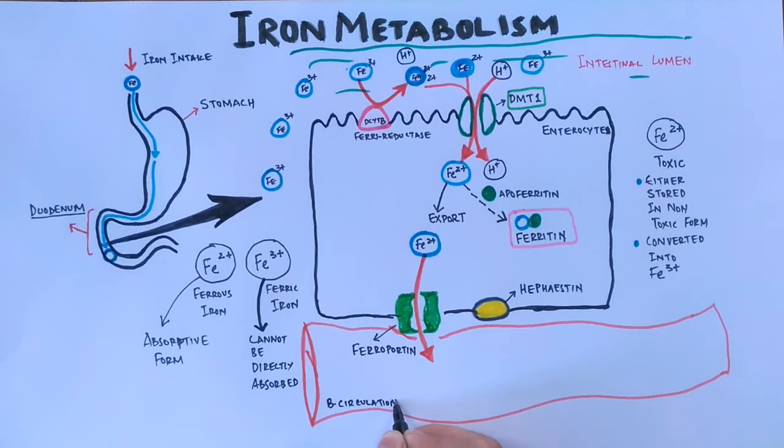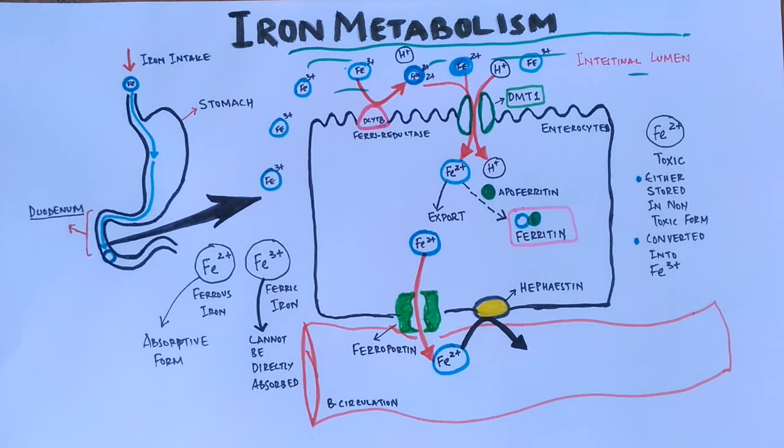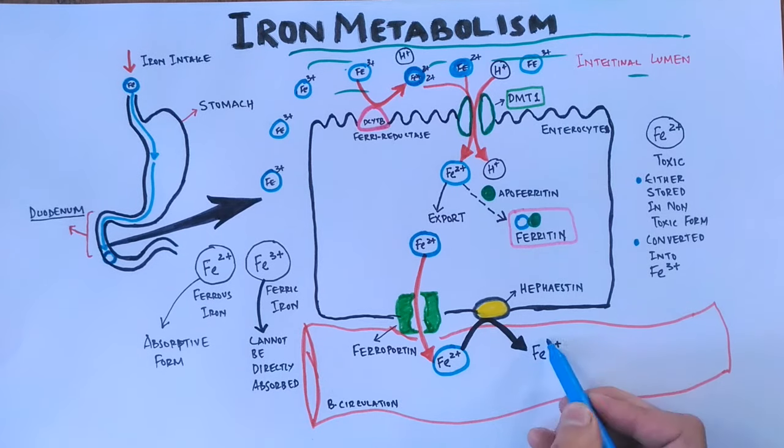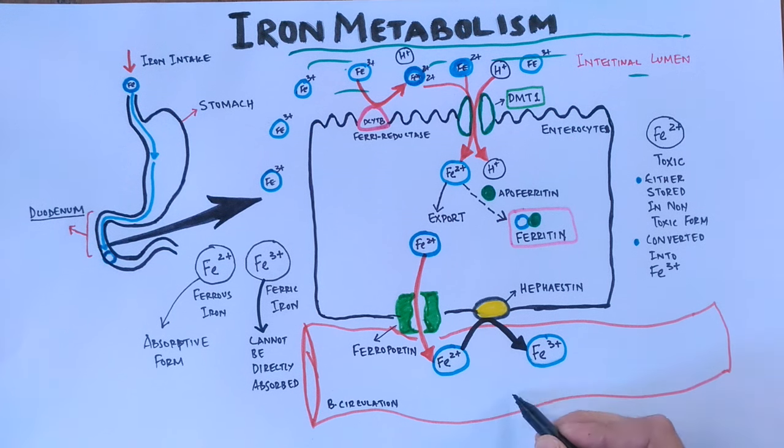Now in the circulation we have ferrous ions, but this ferrous iron is not transportable form of iron. So by the action of hephaestin protein, Fe2+ ions are converted into Fe3+ ions, as hephaestin protein shows ferroxidase activity. So first of all it converts Fe2+ ions into Fe3+ ions. Now we see ultimately we have Fe3+ ions in the blood circulation.